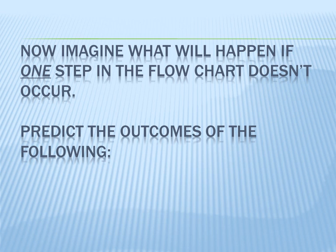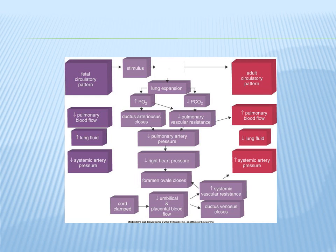Now consider what happens if one step in the algorithm doesn't occur. If the baby did not initiate its first breath even with a stimulus present, and we still clamped the cord, the baby would not transition to adult circulatory pattern without help. Lung expansion wouldn't occur, preventing the chain of events needed. In this case, we would have to ventilate the baby with a bag-valve mask, applying positive pressure ventilation.